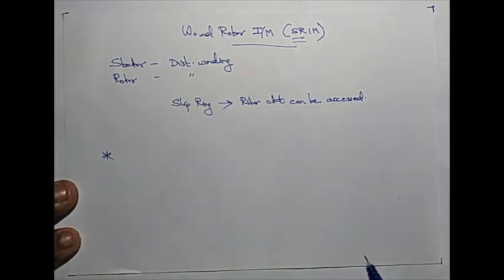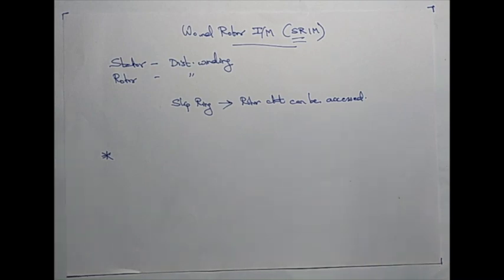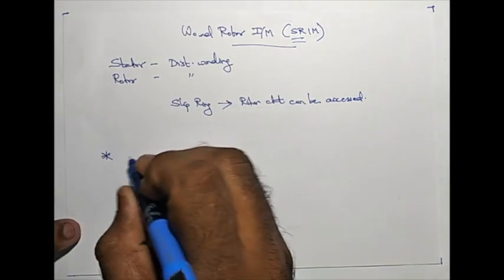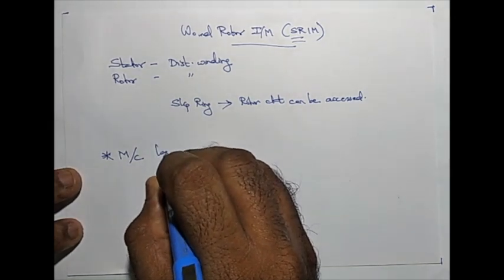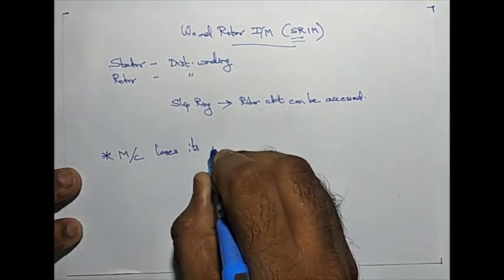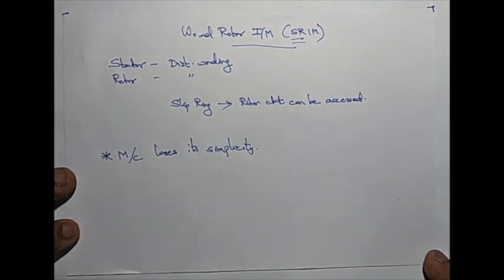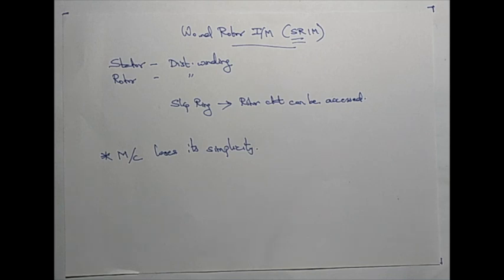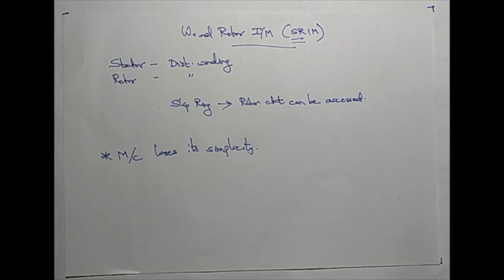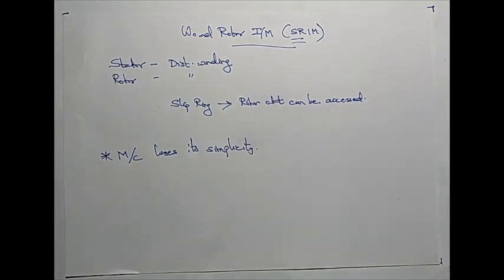What are the salient features of a wound rotor induction machine compared to a squirrel cage induction machine? The foremost is that the machine loses its simplicity. When we transitioned from DC machines to induction machines, the first advantage normally mentioned is that we got away with commutators and brushes — but now brushes come back in the wound rotor induction machine.